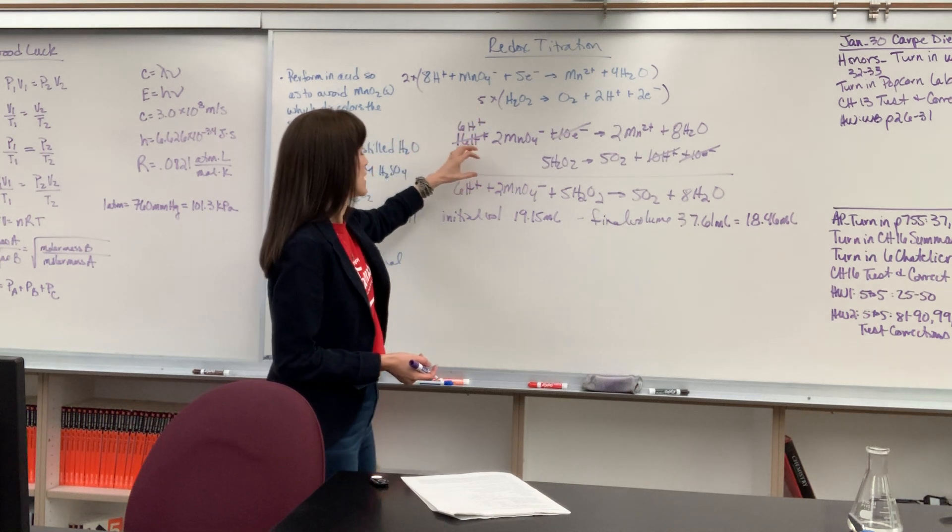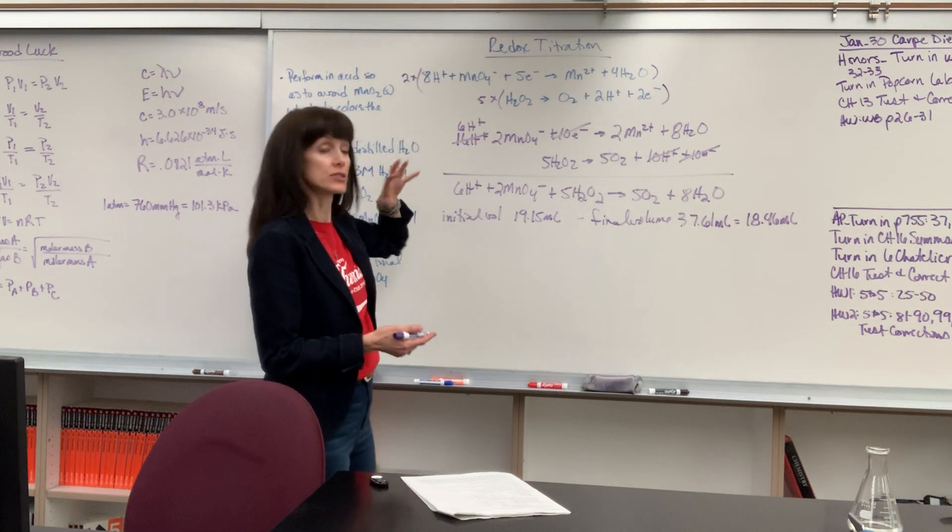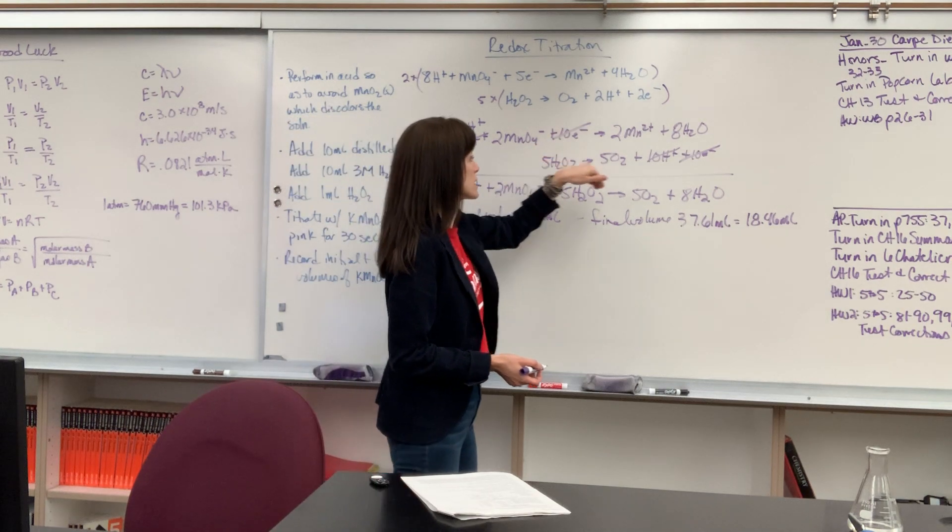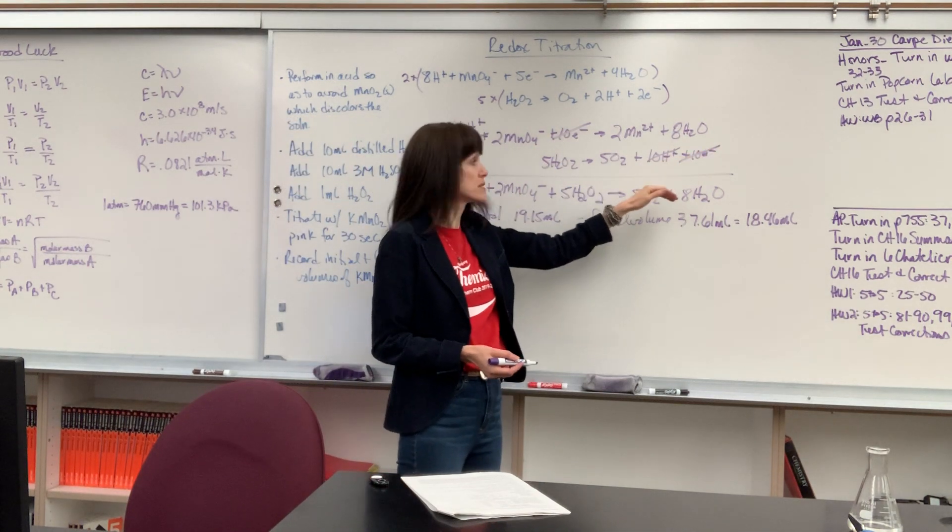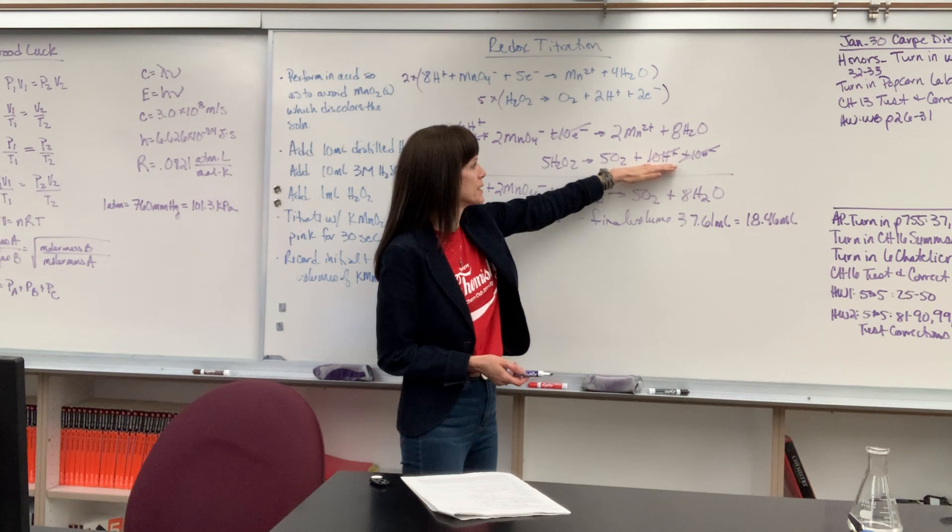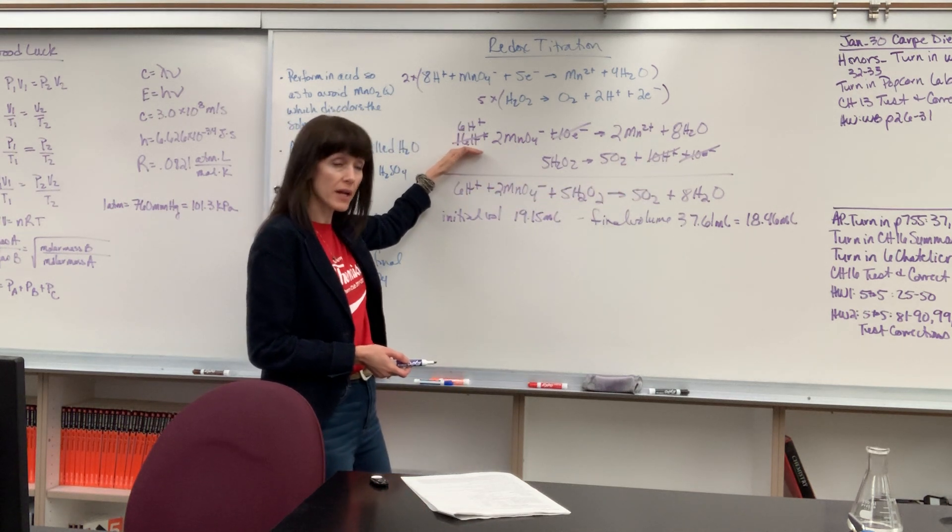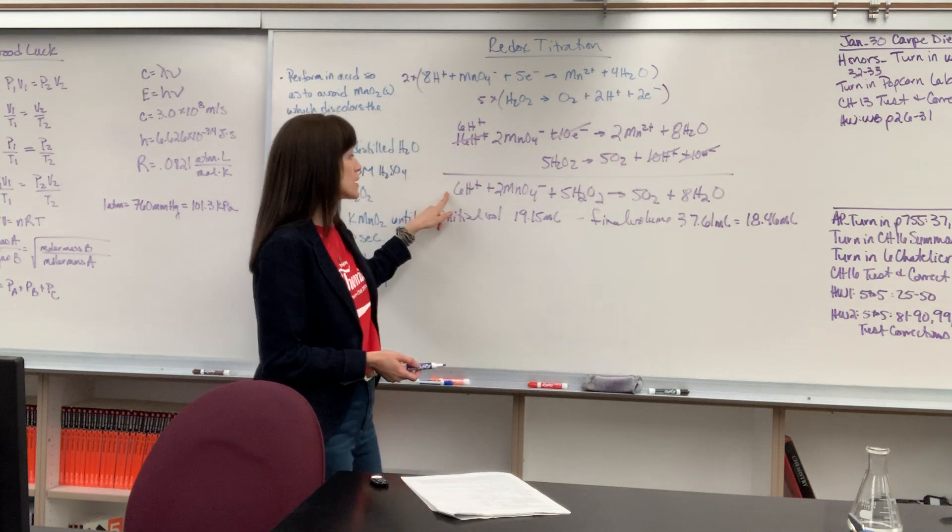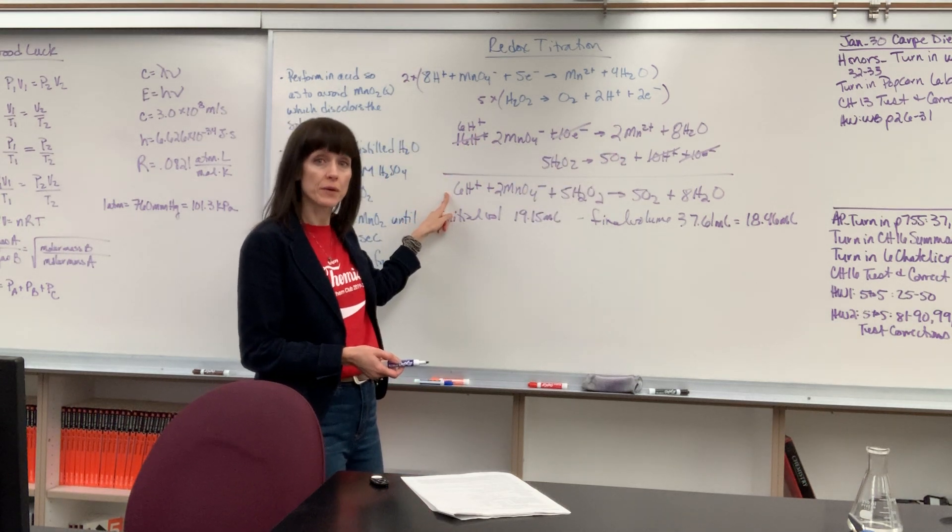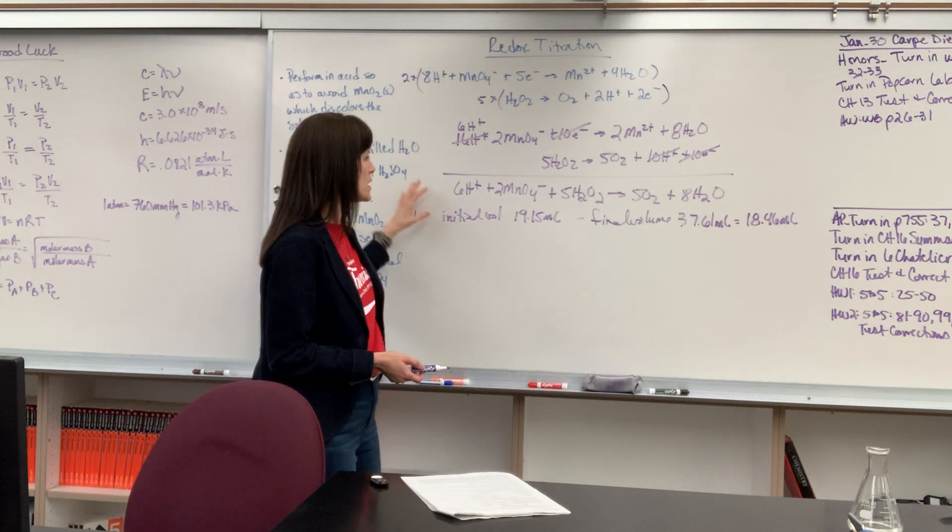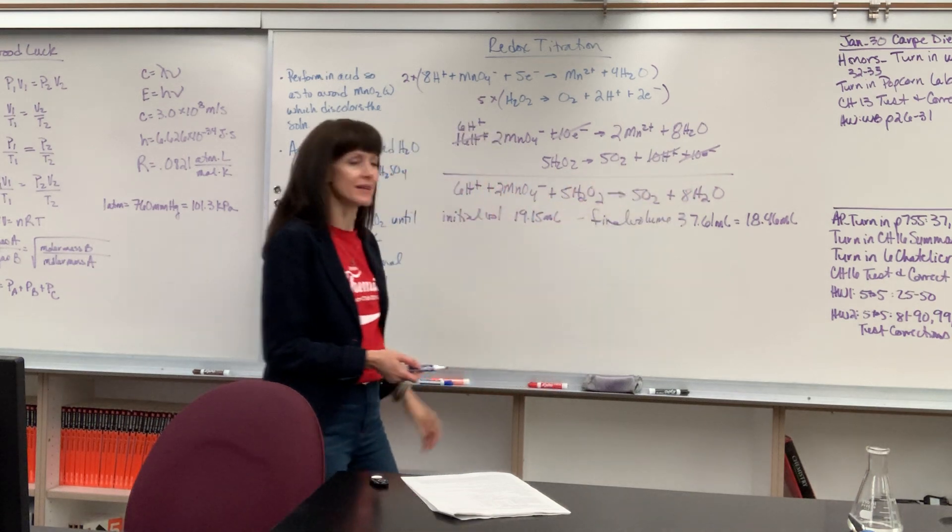When I multiplied that and added my half reactions, notice 10 electrons gained cancels 10 electrons lost. I also wanted to point out we had 10 hydrogen ions on the reactant side, 16 on the product. So if you just track that, you end up with 6 hydrogens on the reactant side. So here is my balanced net ionic equation.